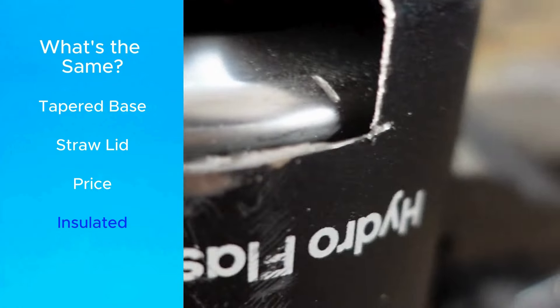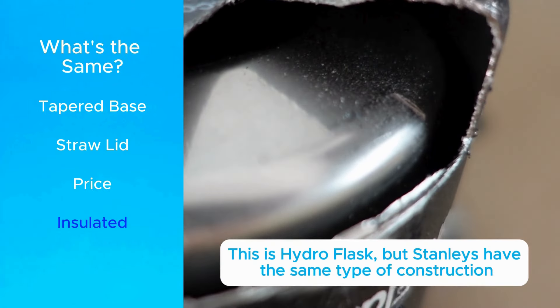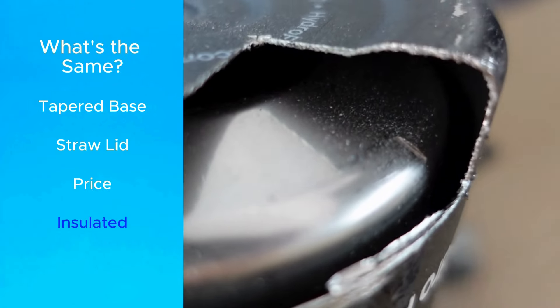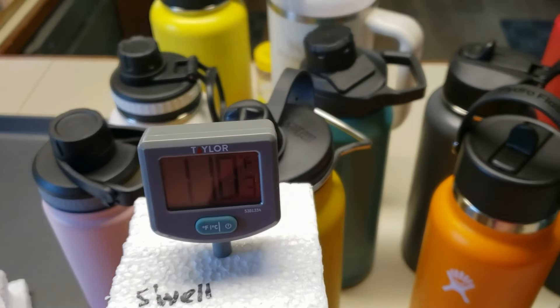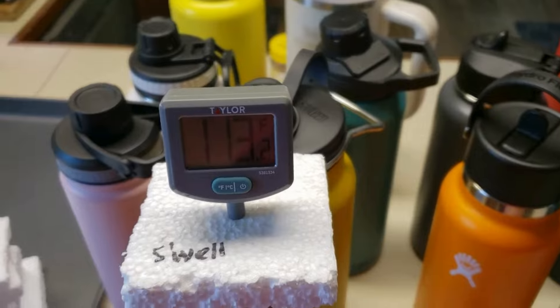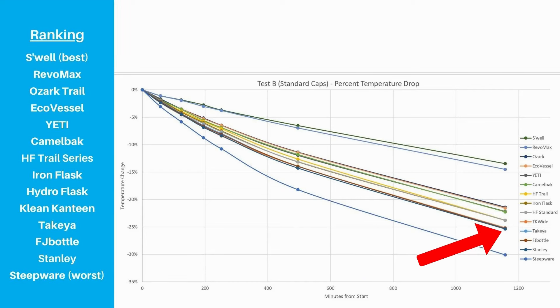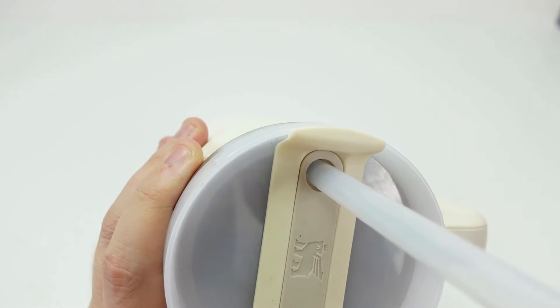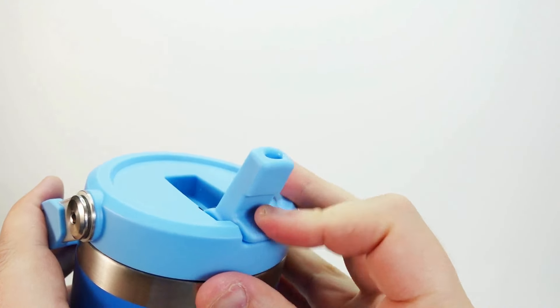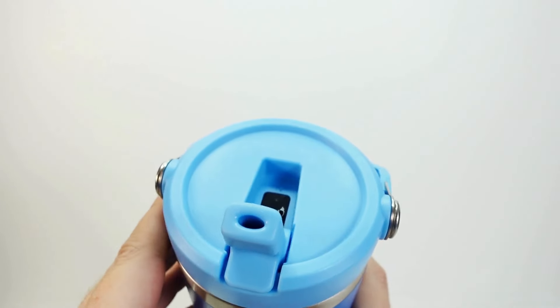Number four, they're both dual wall vacuum insulated, so they're great for holding ice for most people through a typical day. But if you really want to focus on insulation, Quencher is not a great choice. It was on the lower end of an insulation test I did because of the wider top and the open spaces around where the straw pokes through. I expect the Iceflow would be better because of the straw design, but I haven't tested it yet.